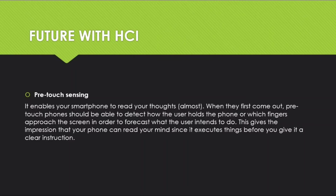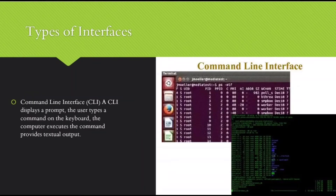Next, we study another topic: types of interfaces. A command line interface, or CLI, displays a prompt where the user types a command on the keyboard, the computer executes the command, and provides textual output. Here is a tool example of a command line interface shown on screen.